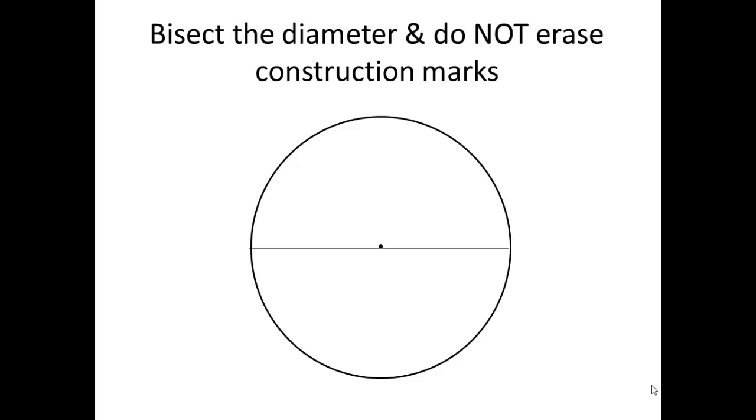Next, you're going to bisect this diameter, and again, do not erase those arcs. So that means you need to figure out this technique. You've been doing this forever, so I will not give you instructions how to do it, but I'm going to show you what it would look like when you do it.